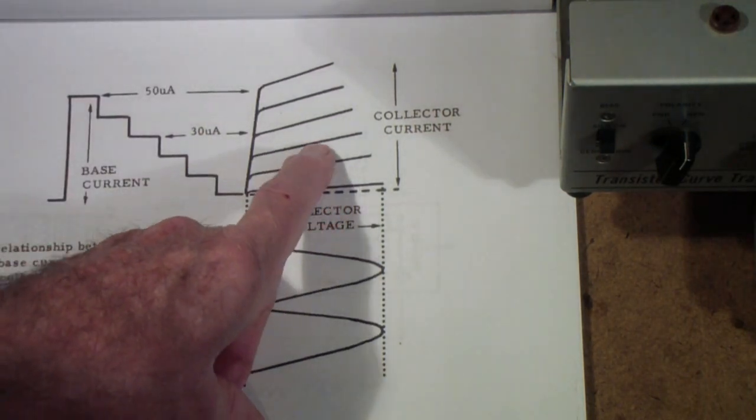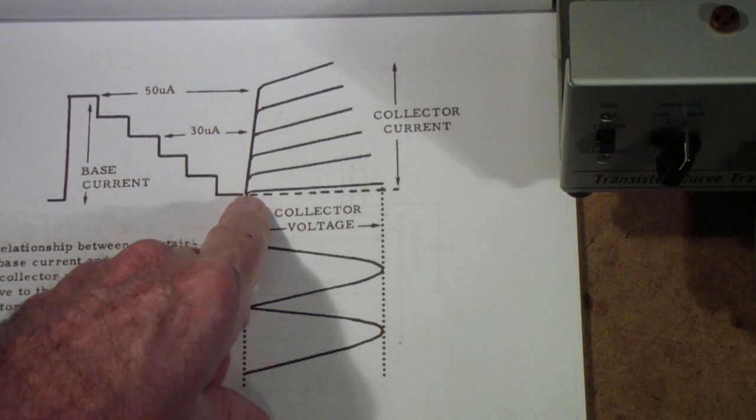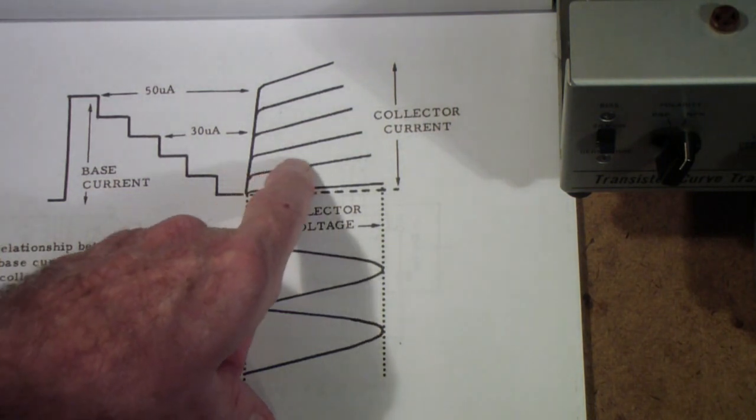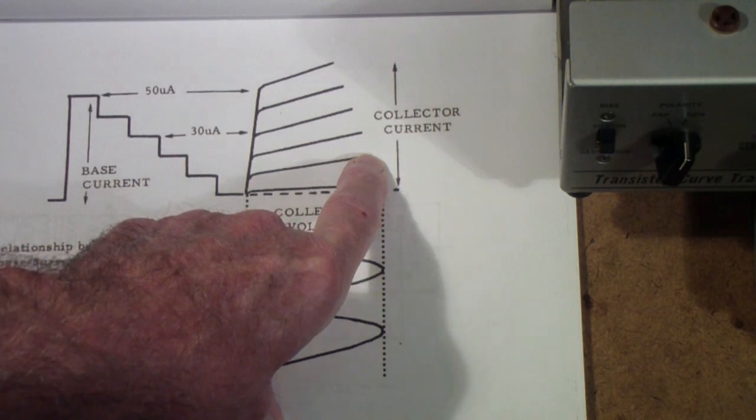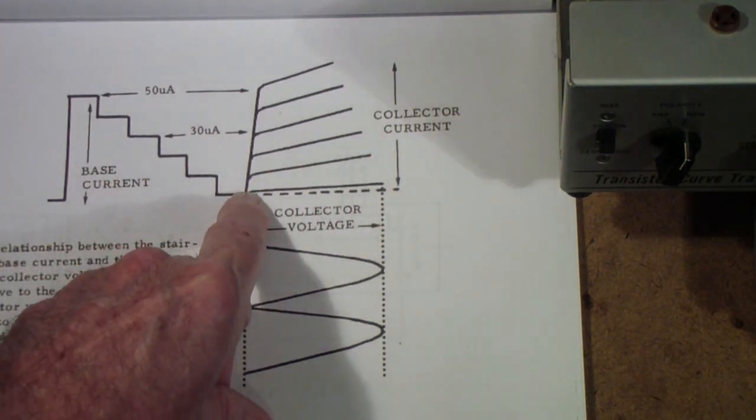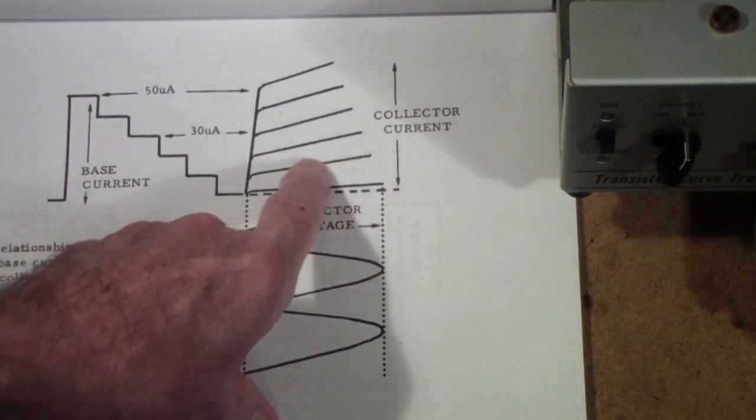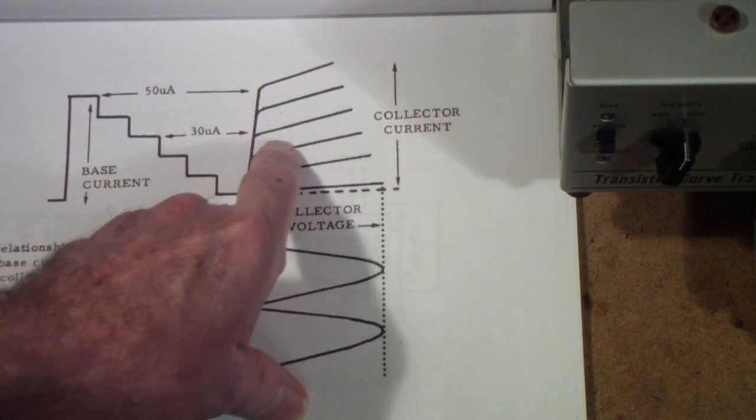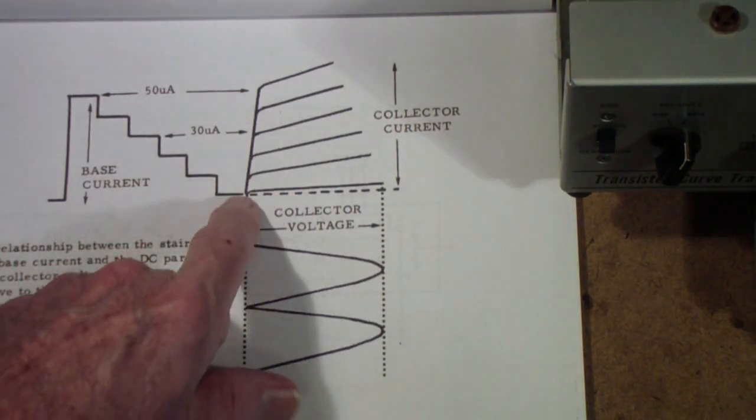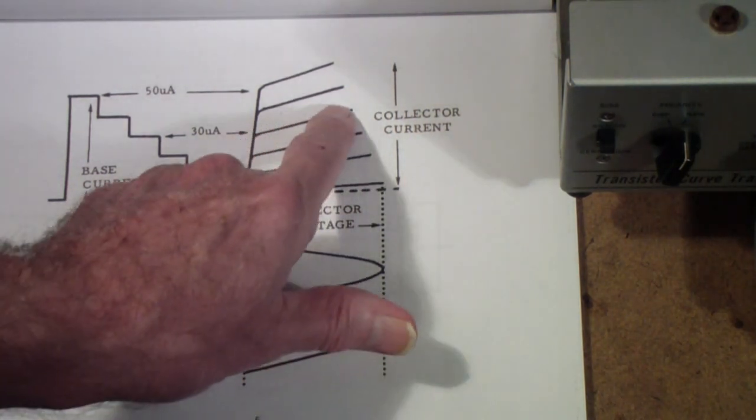So that each step of this is a trace from zero up to the maximum collector voltage, collector to emitter voltage, and then back down again. You can't really see it, but it's actually going up and then sweeping back. Then the base steps, and then it goes up and it comes back. And then the base steps and so on.